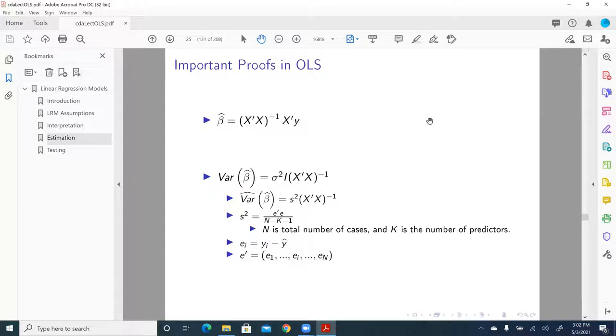So first is the OLS regression parameter estimates including both intercepts and slopes. So that's what we call beta hat. Hat here denotes an estimated parameter as opposed to beta without hat. So beta hat is equal to parenthesis X prime X—prime here denotes transpose. So it is X transpose multiplied by X, the predictor matrix.